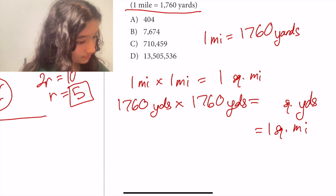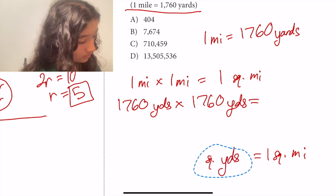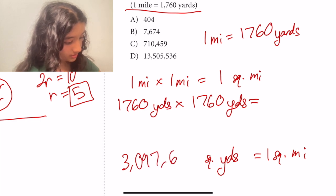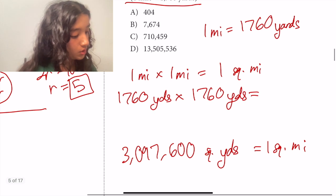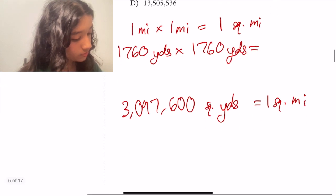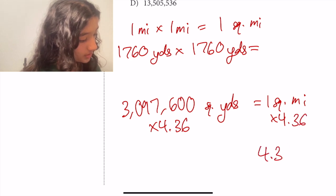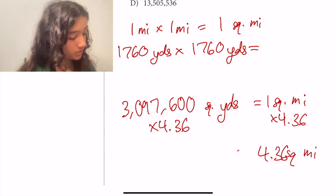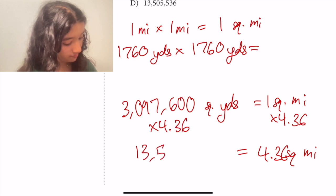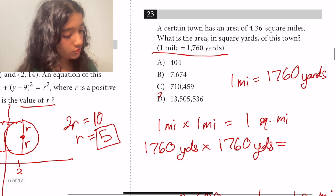3,097,600. So if that's equal to one square mile, and we have 4.36 square miles, then we can multiply both sides by 4.36. So 4.36 square miles is equal to 13,505,536 square yards. And that is answer choice D.